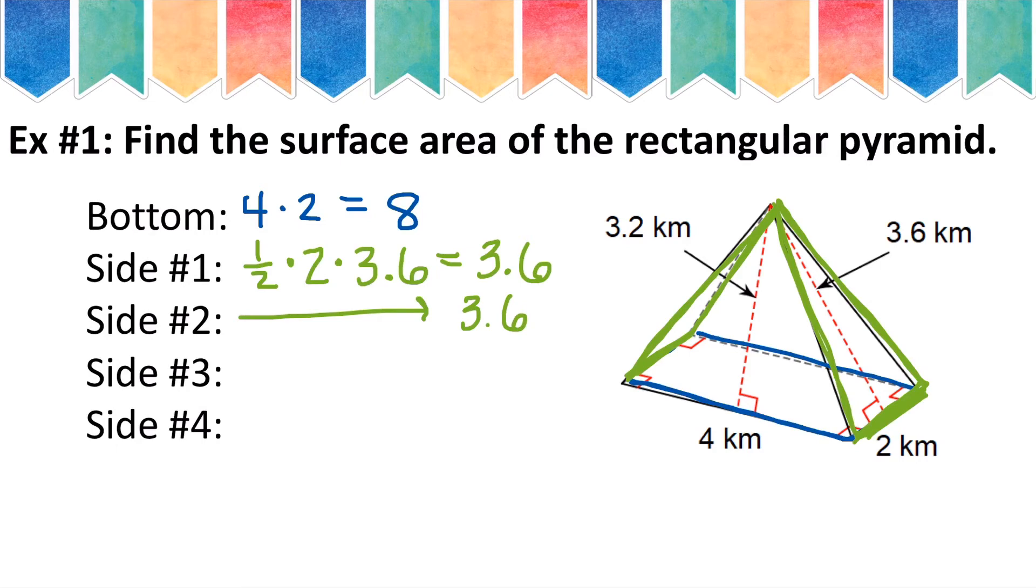Now let's look at this face of my pyramid, kind of this front triangular face. Again, because it's a triangle, I'll have to go 1 half base times height. So I'll go 1 half times 4 times 3.2.